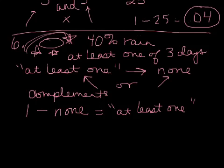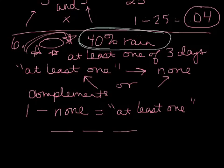So, the probability it rains on none of the days. So remember, you have three days. One, two, three. And if it's a 40% chance of rain, so remember that's up here, 40% chance of rain each day, the probability it does not rain is 60%.